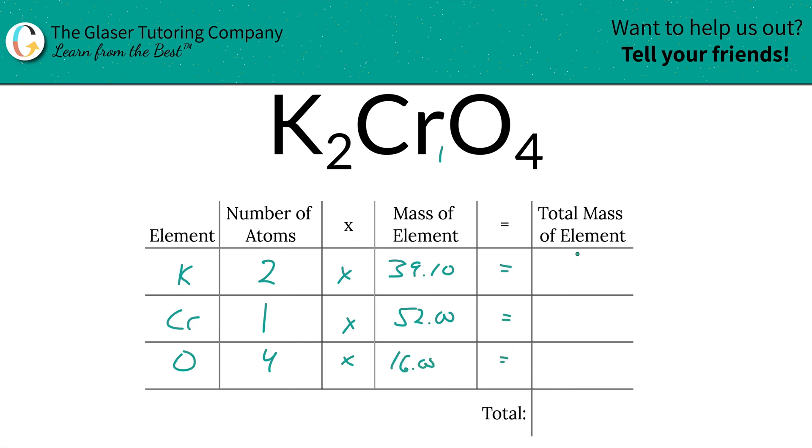To find the total mass of each element in the compound, we're simply going to multiply this row across. That's going to be 78.20 for potassium, chromium stays 52.00, and then for oxygen it's going to be 64.